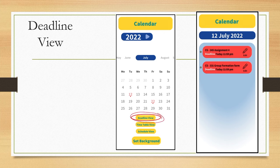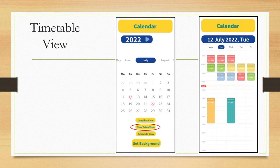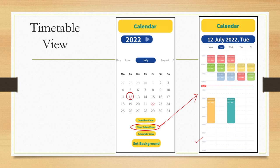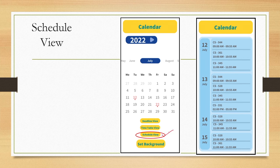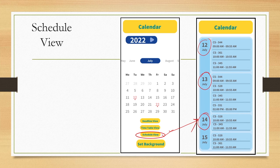For the deadline view, once selected it shows all the deadlines for a specific date which can be chosen. Similarly, to see the timetable we have a timetable view for a specific date, and the timetable for that date is shown in the interface on the right-hand side with additional information. Another option is the schedule view, meant for the schedule of the month - for example 12th, 13th, 14th July - showing the monthly schedule in a scrollable interface.